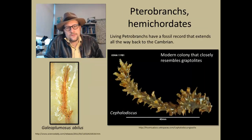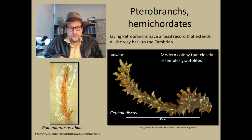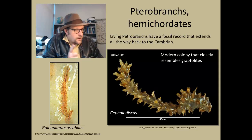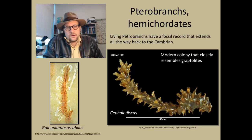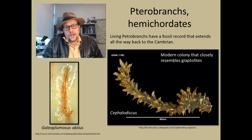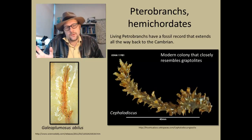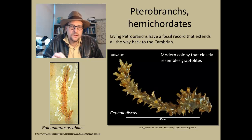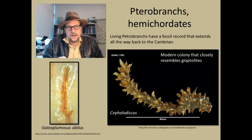Living pterobranches have a fossil record extending all the way back to the Cambrian. The modern Cephalodicscus — one at the Smithsonian Museum — has a very similar type of structure to what we see in the graptolites, and so it's thought that graptolites were an early branch off the hemichordates. They survived differently from modern pterobranches that live deep in the ocean — what they did was basically be floaters, be planktonic, rather than necessarily being sessile, although some graptolites were sessile organisms.